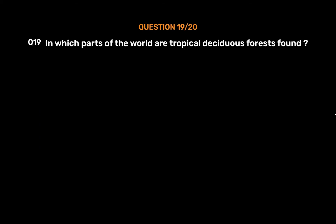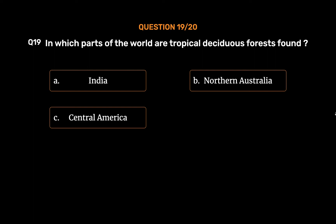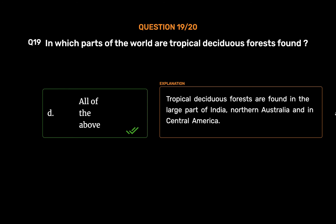Question number 19: In which parts of the world are tropical deciduous forests found? Option A: India. Option B: Northern Australia. Option C: Central America. Option D: All of the above. The correct answer is Option D: All of the above. Tropical deciduous forests are found in a large part of India, northern Australia, and in Central America.